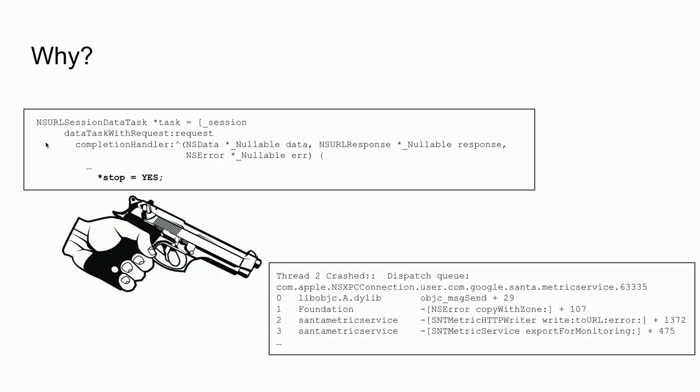We had crash reports where a printf of a constant string was seg-faulting. You go back into the code and think, wait — this is not possible. How are we here?